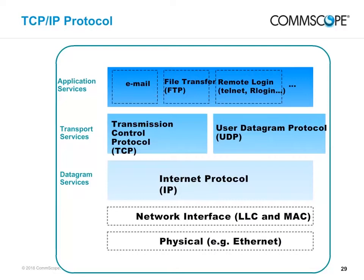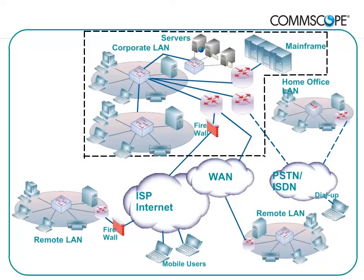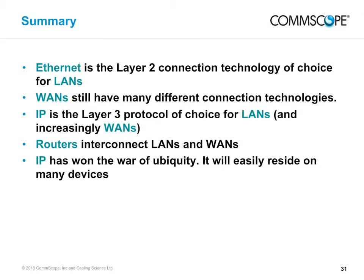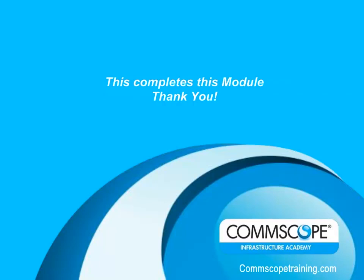Here is a graphic that puts it all together — a corporate LAN with file servers, mainframe, and LAN; remote LANs connected via routers across three different kinds of remote connection; and hubs, switches, and routers at various positions in the network. This presentation gave a broad grounding in data communications technology and techniques. Here is a summary of the key points: Ethernet is the layer 2 connection technology of choice for LANs; WANs still have many different connection technologies; IP is the layer 3 protocol of choice for LANs and increasingly WANs; routers interconnect LANs and WANs; and IP has won the war of ubiquity and will practically reside on nearly every device. That completes the Networking Fundamentals module. Thank you.